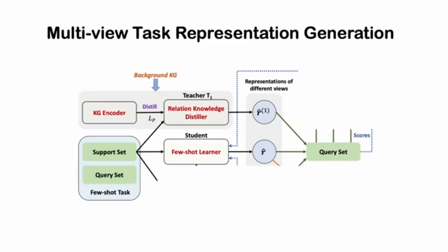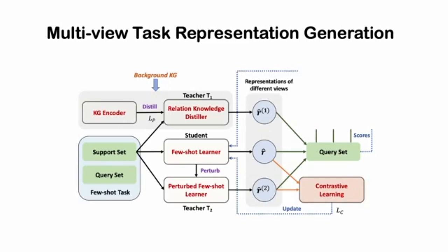The framework consists of four components: Few-Shot Learner, Perturbed Few-Shot Learner, Relation Knowledge Distiller, and Pairwise Contrastive Distiller.